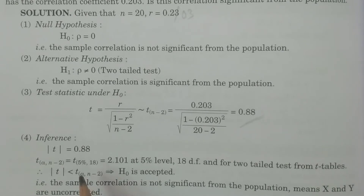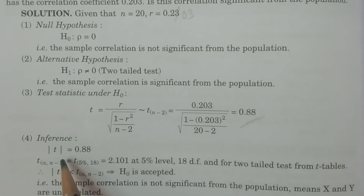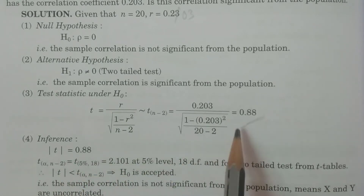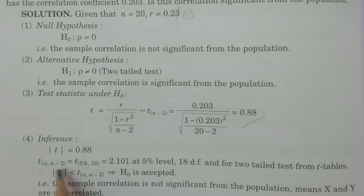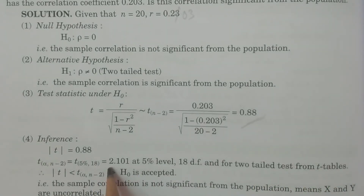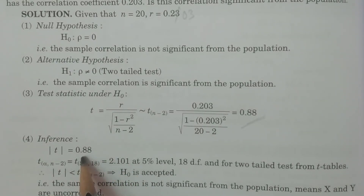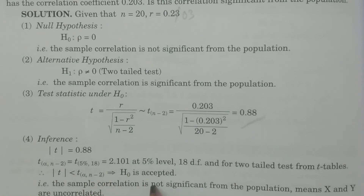Comparison and conclusion: the modulus of t is 0.888. The tabulated value at alpha 5% level with (n minus 2) equals 18 degrees of freedom for a two-tailed test from the t-tables is 2.101. Since 0.88 is less than 2.101, modulus of t is less than t-alpha at 5% and 18, which implies H0 is accepted.